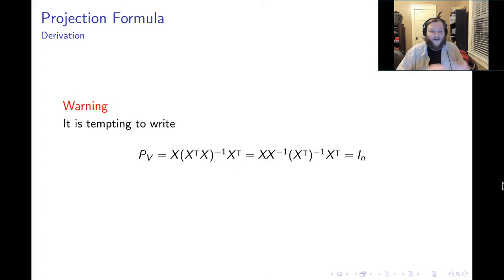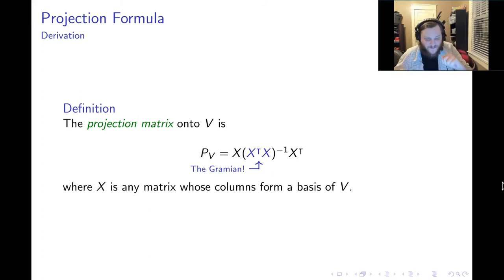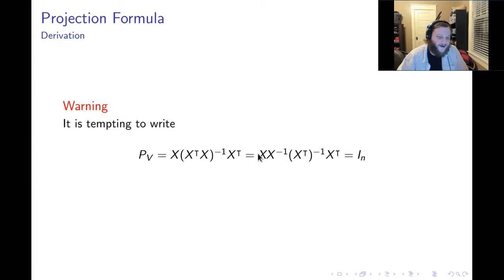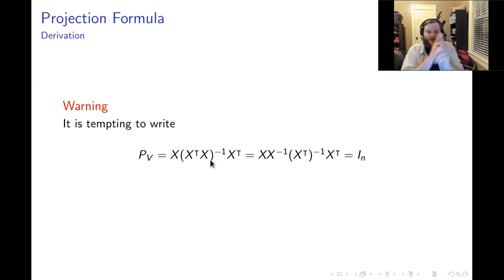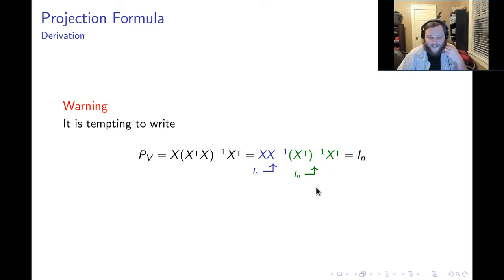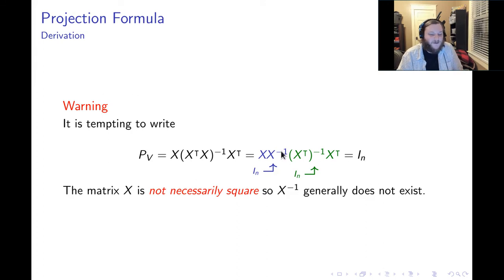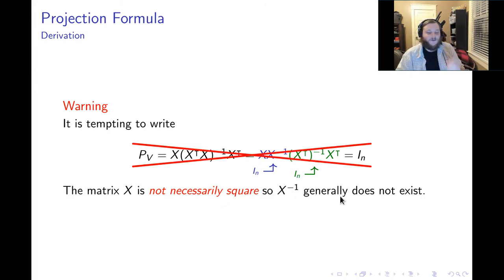I have to issue a word of warning here, because it's tempting to look at the projection formula and want to simplify it — but we can't simplify it generally. It's tempting to distribute the inversion sign, but we can't do that. If we tried, the false equation would be: distribute the inverse sign across the product, switch the order, and invert — giving X times X inverse times X transpose inverse times X transpose. Then X times X inverse would be the identity, and X transpose inverse times X transpose would be the identity, telling us the projection matrix is always just the identity. This is a totally false equation. The reason we can't do this is that X will not necessarily be square, so X inverse generally does not exist. So don't do this — it is a huge mistake.